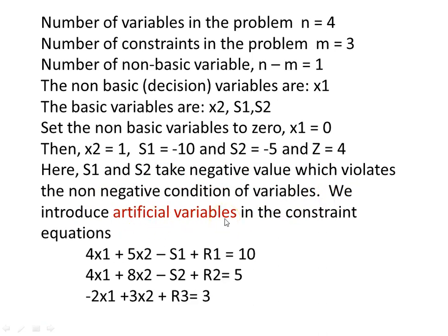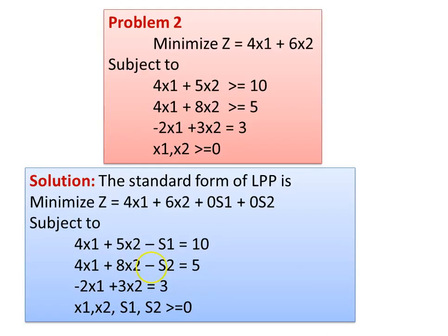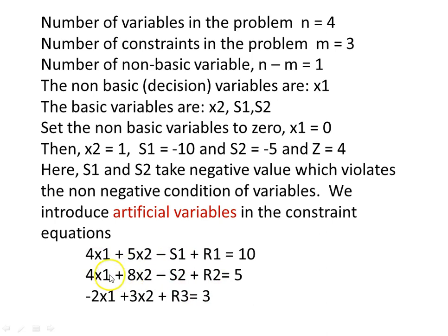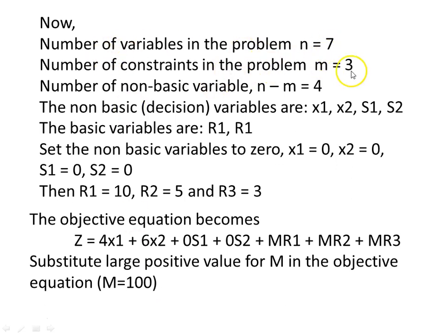We introduce artificial variables in all three constraints: 4x1 plus 5x2 minus s1 plus r1 equal to 10; 4x1 plus 8x2 minus s2 plus r2 equal to 5; minus 2x1 plus 3x2 plus r3 equal to 3. Now the number of variables is 7, number of constraints is 3, and number of non-basic variables is 4. Non-basic variables are x1, x2, s1, s2; basic variables are r1, r2, r3. Setting non-basic variables to 0 gives r1=10, r2=5, r3=3 — all non-negative, satisfying the condition.